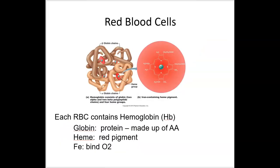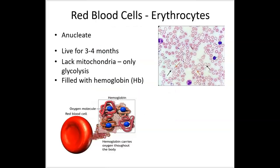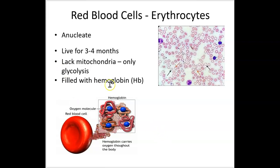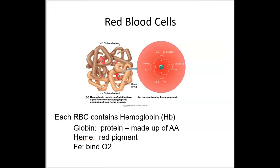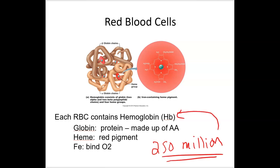Looking at hemoglobin: a red blood cell is packed with hemoglobin and does not have the usual organelles or mitochondria. So it can only do glycolysis and can only use glucose for energy. One reason we must maintain blood glucose levels is that our red blood cells constantly need it — they never get a break. One red blood cell has 250 million hemoglobin molecules.